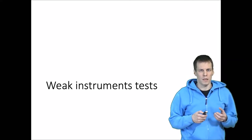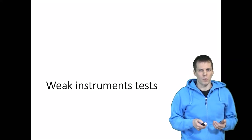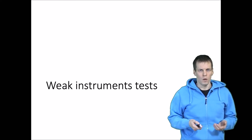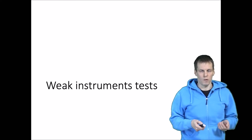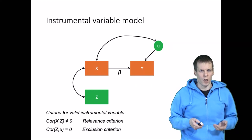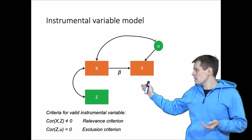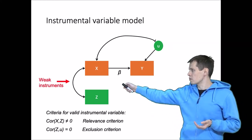Weak instruments refers to a scenario where the instrumental variables are only weakly correlated with the endogenous explanatory variables. Why would that be a problem? The weak instruments case concerns this correlation between x and z.